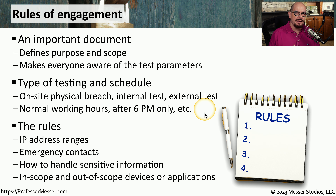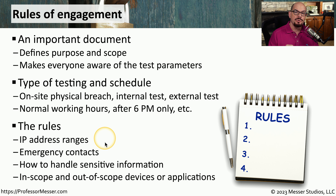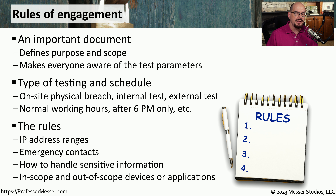There are also detailed breakdowns of exactly what systems are allowed to be tested, such as specific IP address ranges. There might also be emergency contacts listed in the rules of engagement so everyone knows who to contact in case of questions. Occasionally a penetration test will uncover sensitive information, so it's useful to document exactly how to handle that data in the rules of engagement. It's also important that everyone understands which systems are in scope and which are out of scope and should not be touched, so that our production systems stay up and running.